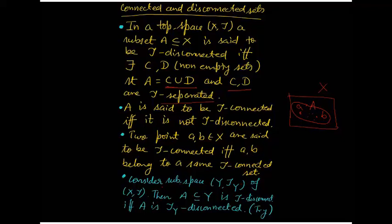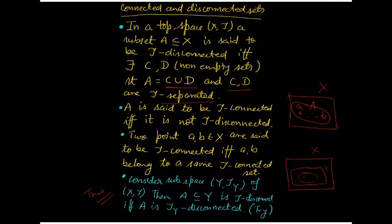Here is a result you can try yourself — it's an easy one. If (X, τ) is a topological space with subspace (Y, τ_Y), and A ⊆ Y, then A is τ_Y-disconnected if and only if A is τ-disconnected. This result tells us that disconnectedness in a subspace is equivalent to disconnectedness in the full topological space.